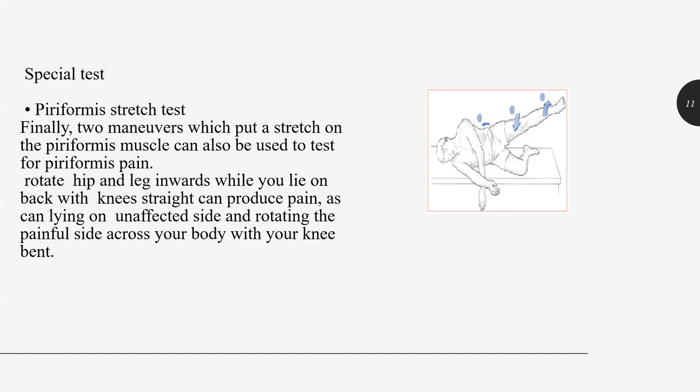A maneuver which puts a stretch on the piriformis muscle can also be used to test for piriformis pain. Rotate the hip and leg inward — this is the piriformis stress test. The patient's hip is rotated with knee straight, leg in inward rotation on the same side lying position. If this reproduces the patient's symptoms, the piriformis stress test is positive.